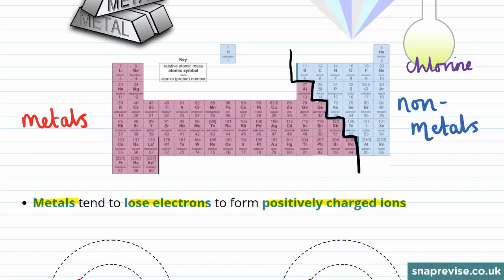For example, all elements in the second period or second row have outer electrons in the second shell, which we know can hold eight electrons.